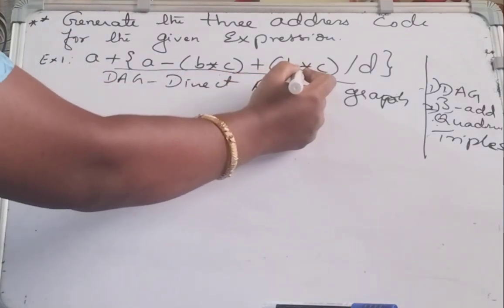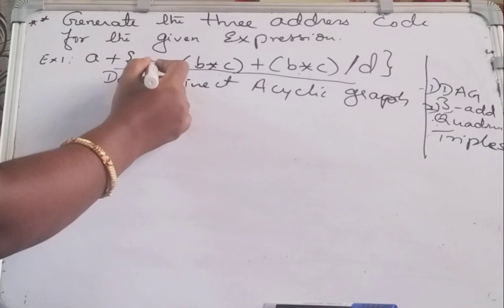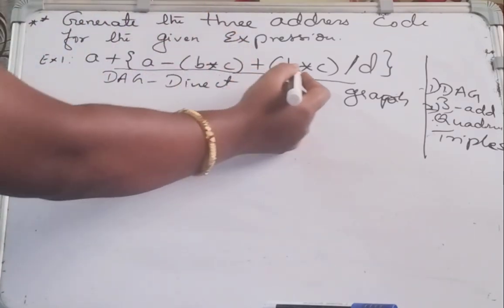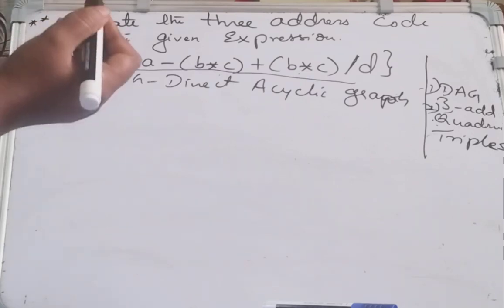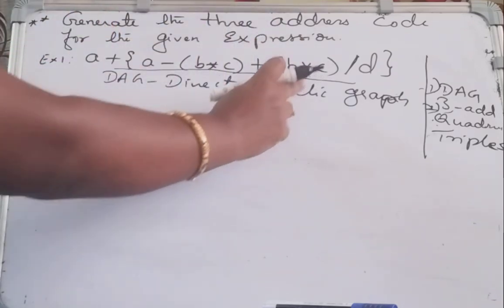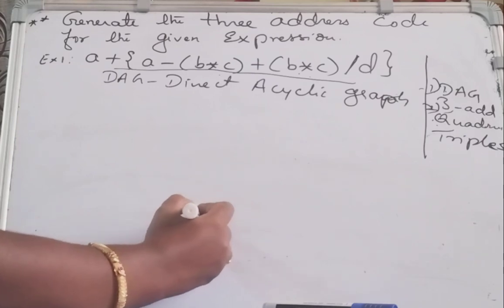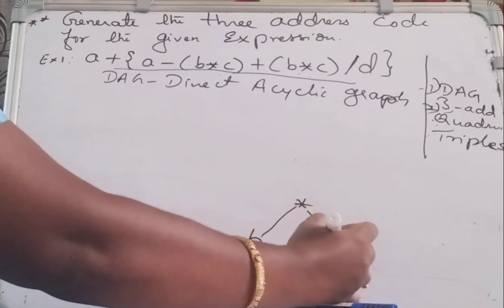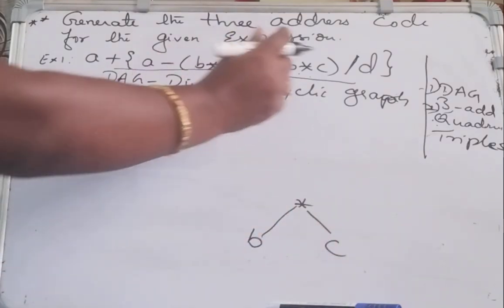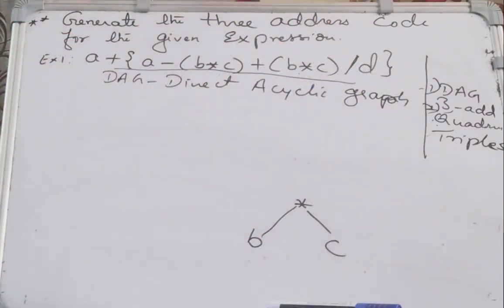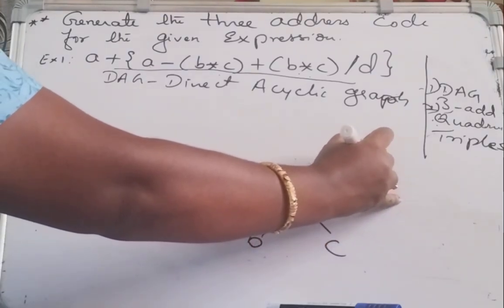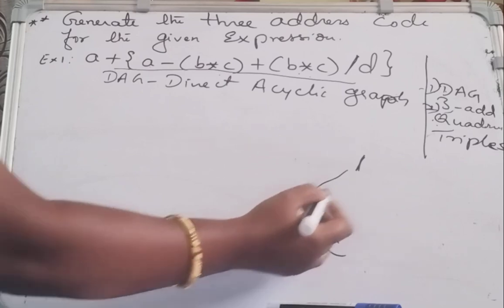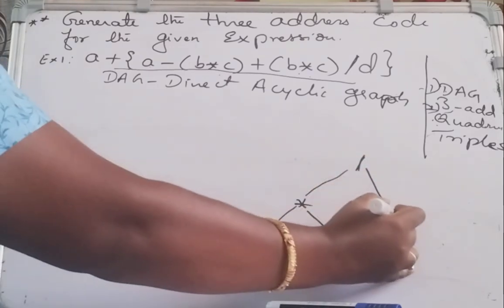Here I have B star C divided by slash D, and here I have A minus B star C. I am going to consider the BODMAS rule only to construct the DAG. First is the brackets, that is B star C — start from the bottom, B star C. Star and division have the highest hierarchy, so the next node will be the division operator. Always the operators will be the intermediate nodes and leaf nodes will be the operands. The operand here is D.